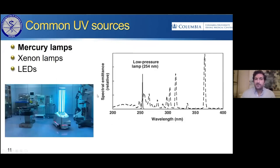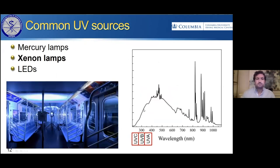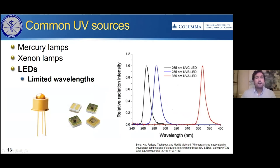Some of the common UV sources: one is mercury lamps. A low pressure mercury lamp has almost all of its emission at 254 nanometers, and a medium pressure mercury lamp has emissions throughout the UVC and UVB regions. Another source is xenon lamps, which have a much broader range of emissions going from the UVC through the visible and much of the infrared. Then another source is LEDs, which are now available that emit in the UVA, UVB, or UVC regions.